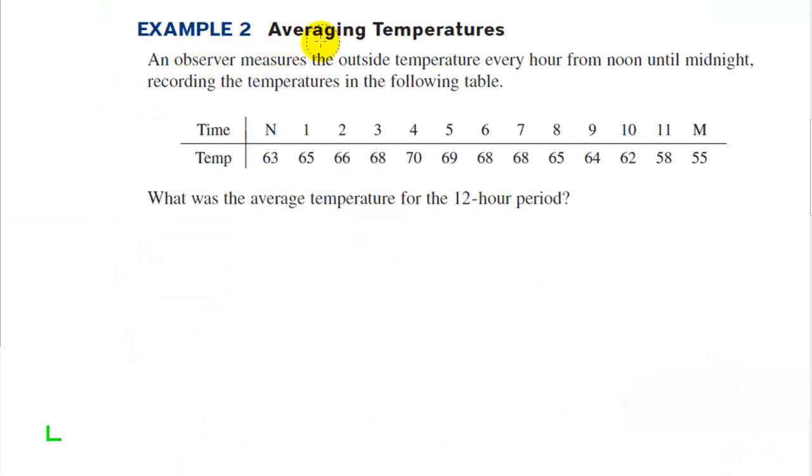In example 2, an observer measures the outside temperature every hour from noon until midnight, recording the temperatures in the following table. What was the average temperature for the 12 hour period? The average temperature is going to be 1 over 12 times the integral from 0 to 12 of some sort of function that gives us the temperature. We don't have this function, so we're going to have to come up with another way to get this value, the area under the curve, and we're going to use the trapezoidal method.